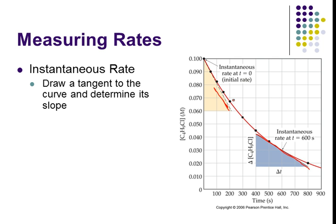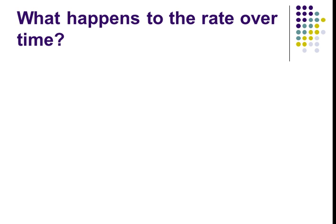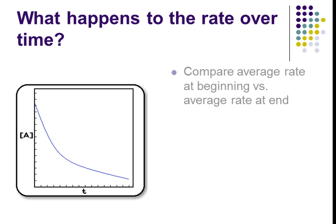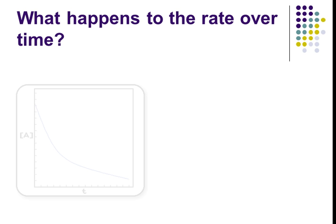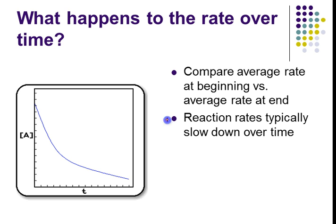As time goes on and there are fewer particles, reactions tend to slow down. At the beginning versus the end, rates are getting slower. This is very typical — reaction rates slow down. We very often see that with reactions. It's very typical that reactions are getting slower and slower as the reaction goes on.